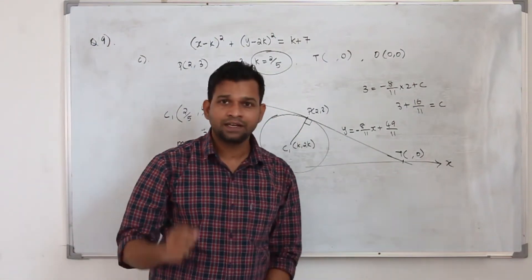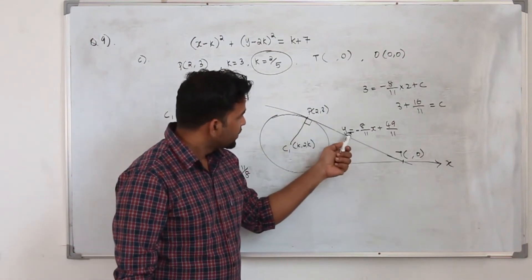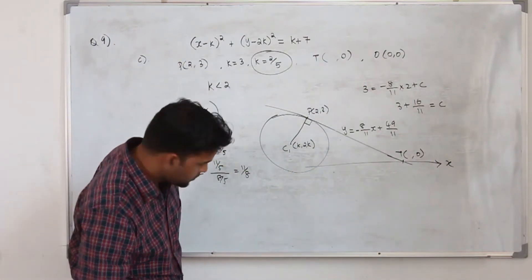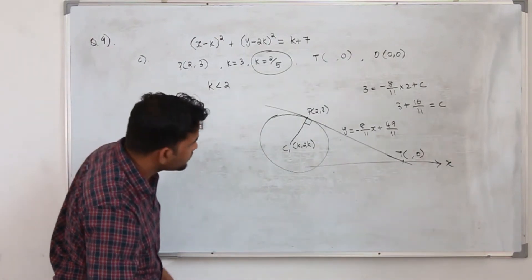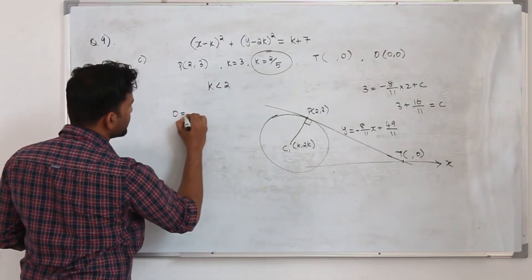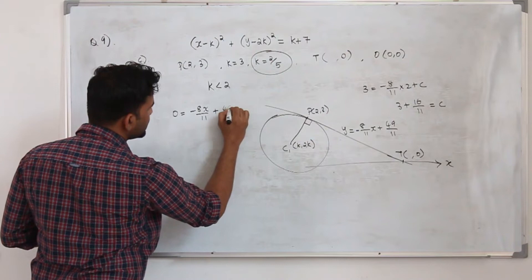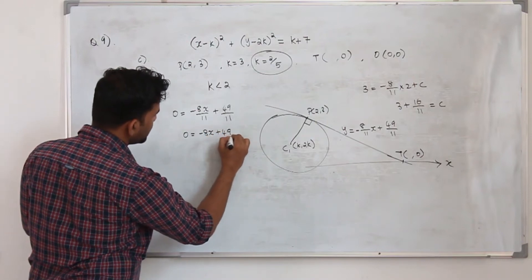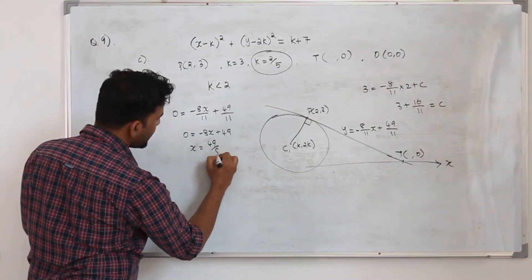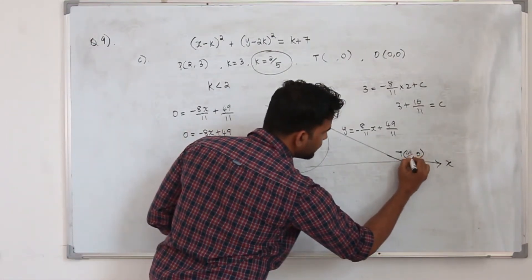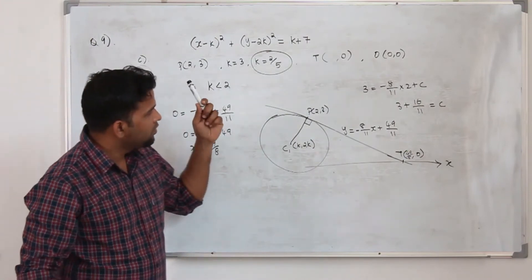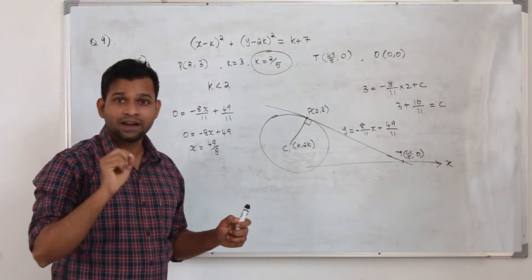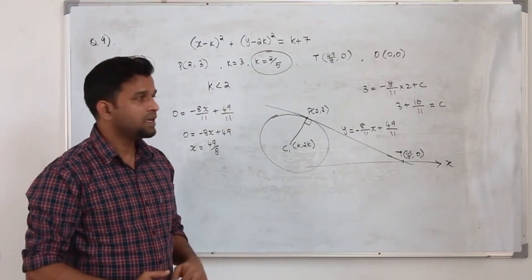Now in this equation, replace y by 0 to get the x-coordinate of point T. Setting 0 equals minus 8x upon 11 plus 49 upon 11, multiply everything by 11: 0 equals minus 8x plus 49. So x equals 49 upon 8. That is the x-coordinate of T, which is 49 upon 8.